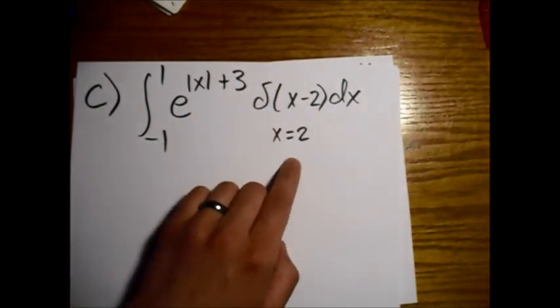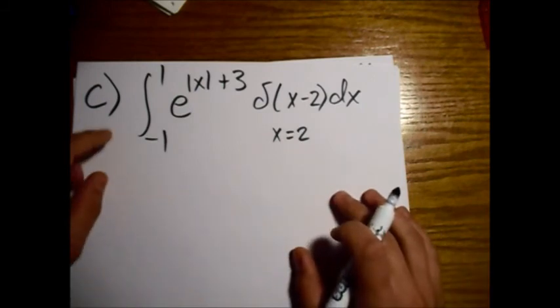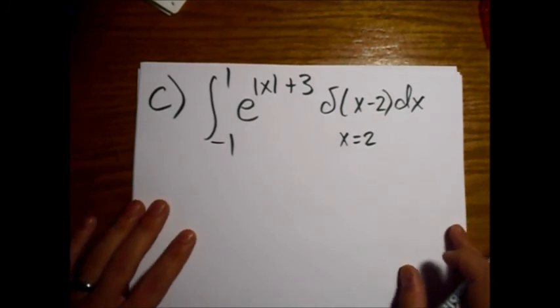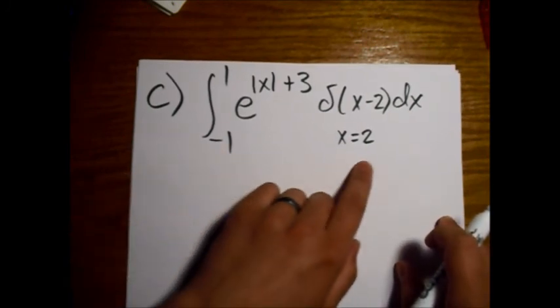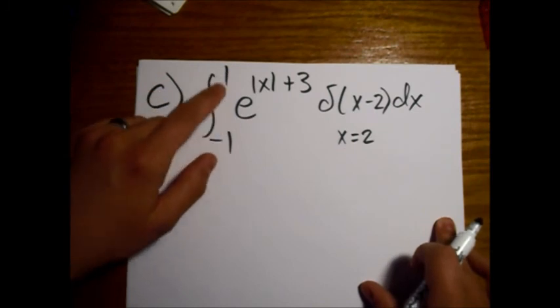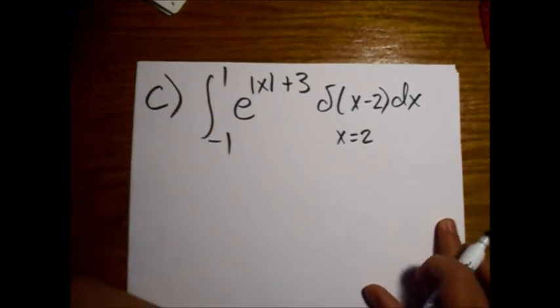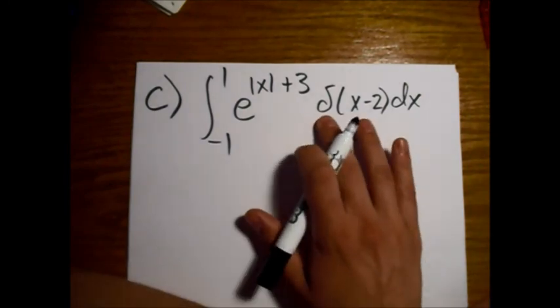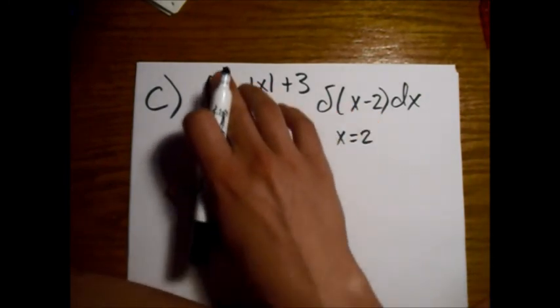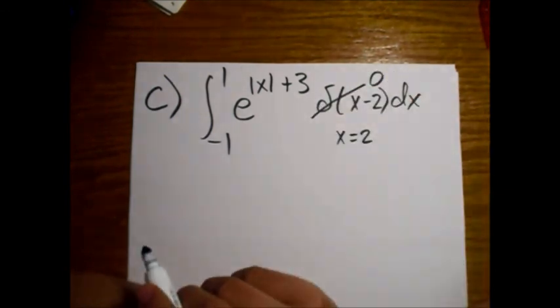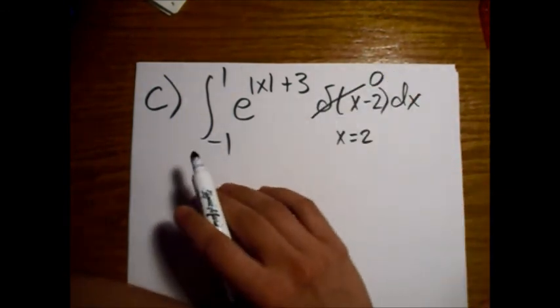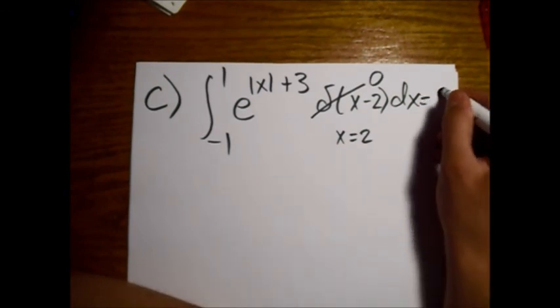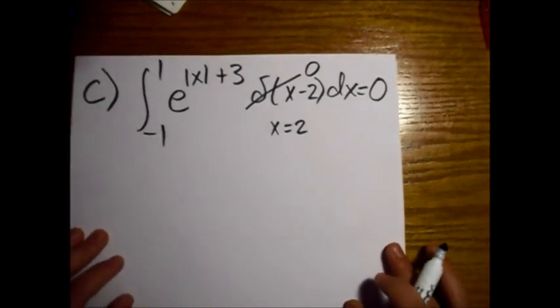And we check our limits of integration, which go from minus 1 to 1. But we find out that this point x equals 2 is not contained within our limits of integration. It's greater than 1. So this Dirac delta function is 0 over this entire range, and that makes the entire integral equal to 0. So that's the third one.